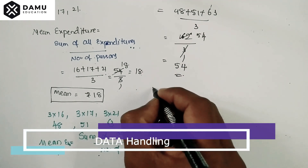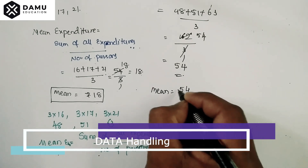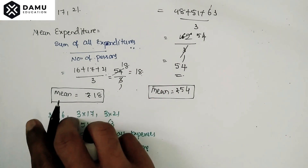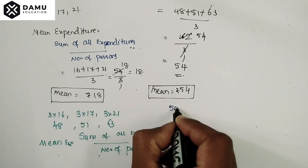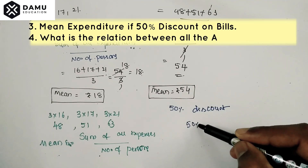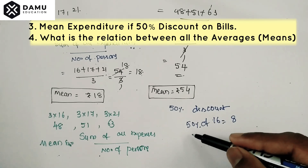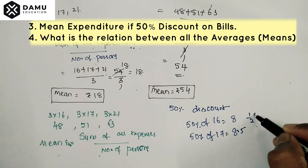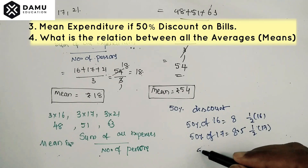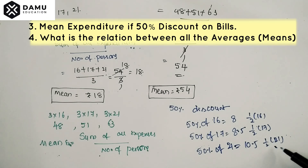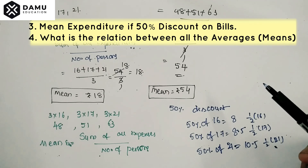If the expenditure increases by 3 times, the mean becomes 54 rupees. The next sub-question asks: if the hotel manager gives a 50% discount, what is the mean expenditure now? 50% of 16 is 8, 50% of 17 is 8.5, and 50% of 21 is 10.5.